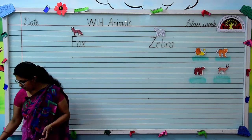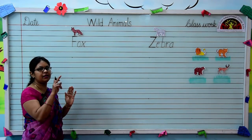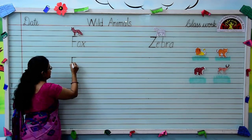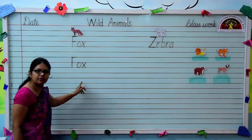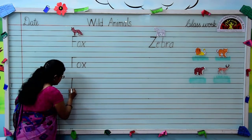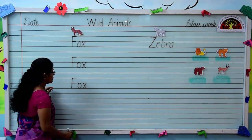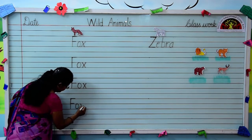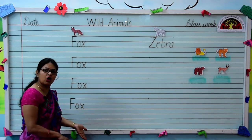Now we will learn to write the spellings of these animals. First we will start from fox. We have to write capital F. Hold your pencil and write down here. F-O-X, fox. The spelling of fox is F-O-X. Now move to the next spelling.